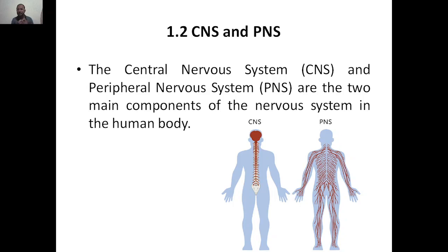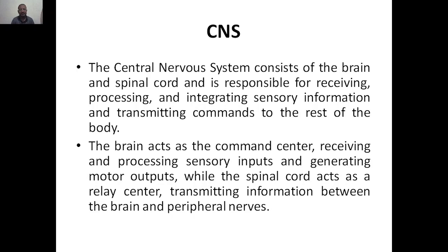CNS and PNS are two main components of the nervous system in the human body. Let us see what CNS is first. CNS, that is Central Nervous System, it consists of brain and spinal cord. The brain and spinal cord are responsible for receiving, processing, integrating sensory information, and transmitting commands to the rest of the body.